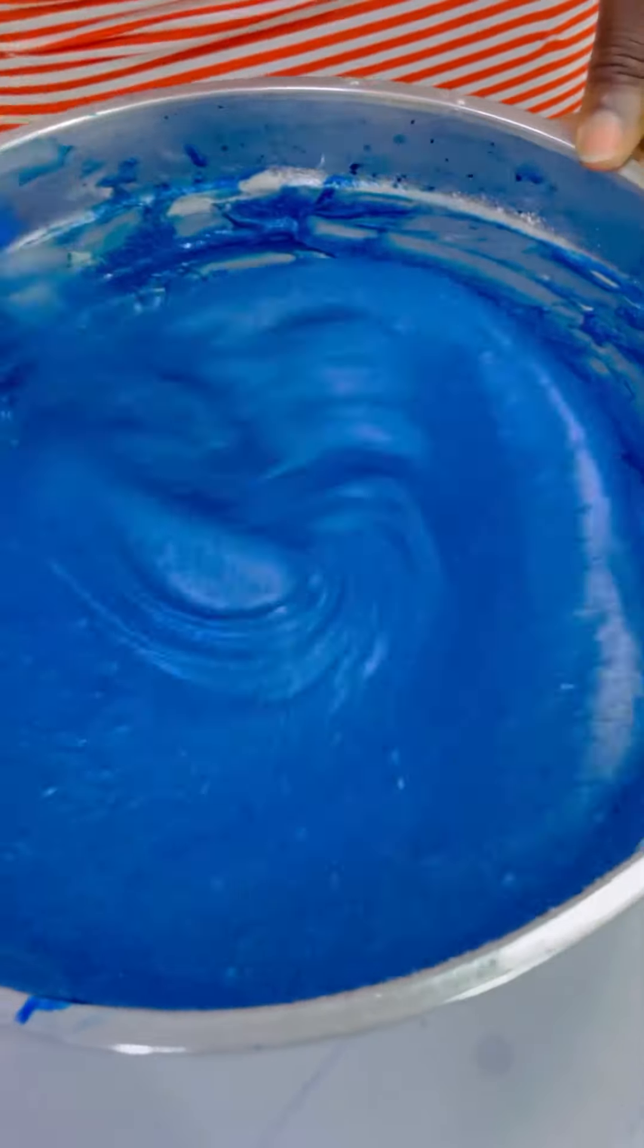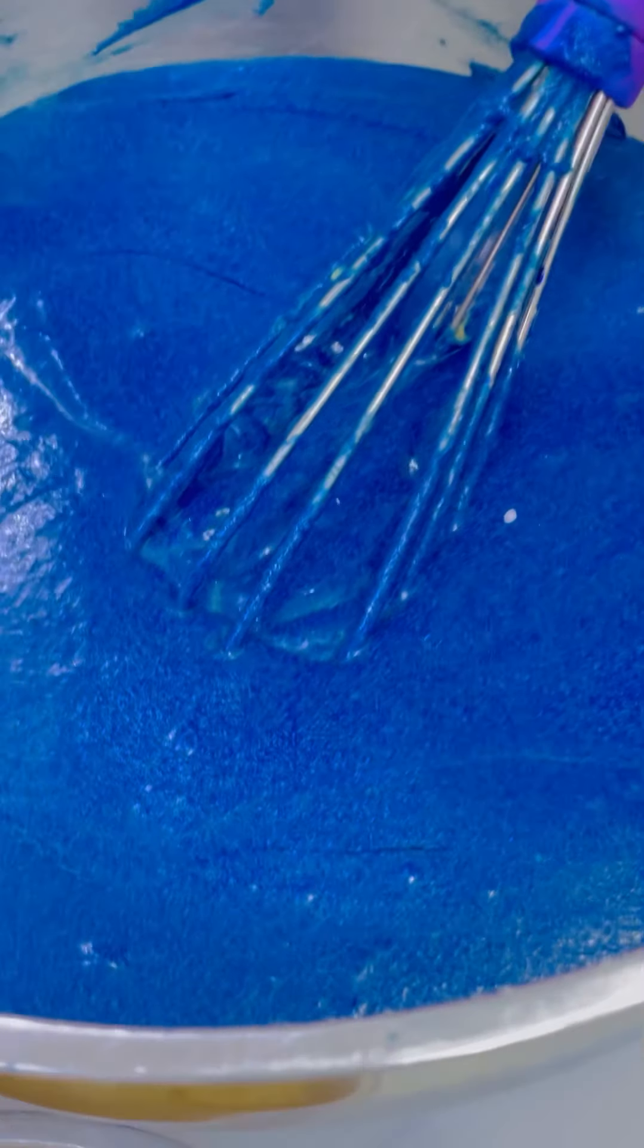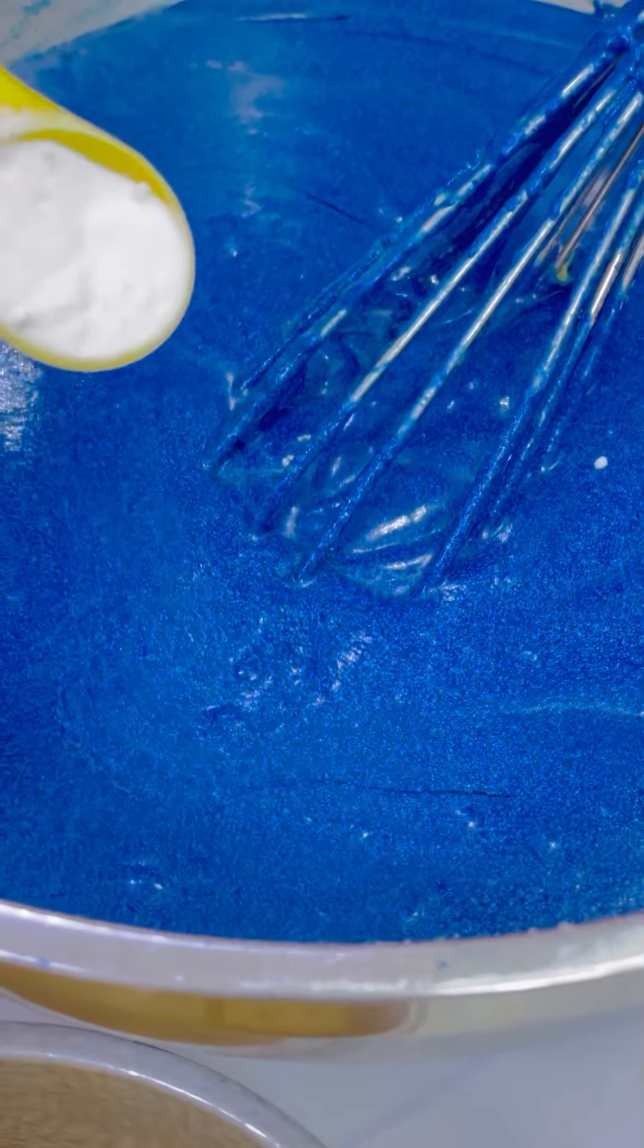Alright, so our batter has been finely or neatly mixed. As you can see, you keep on scraping the sides. So now we are going to add our baking soda and vinegar. That's the last ingredient we need in there.